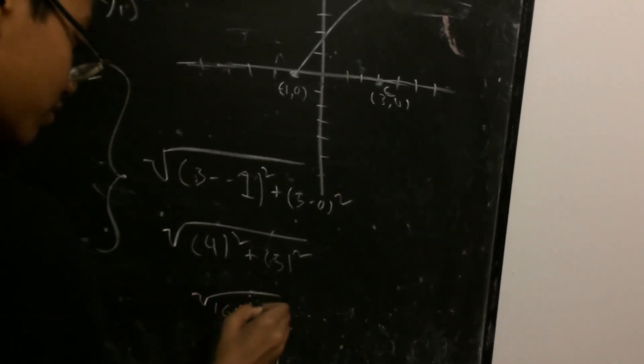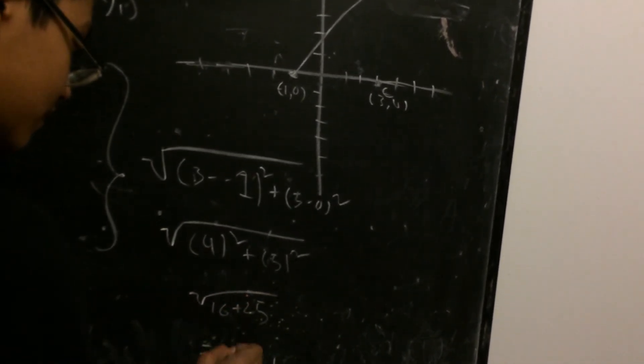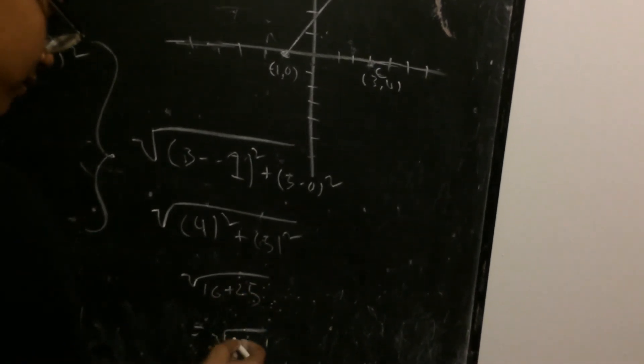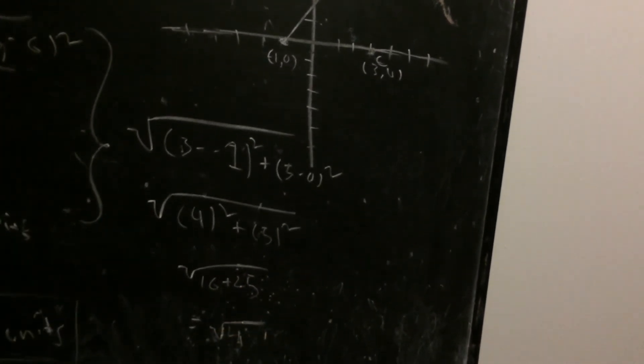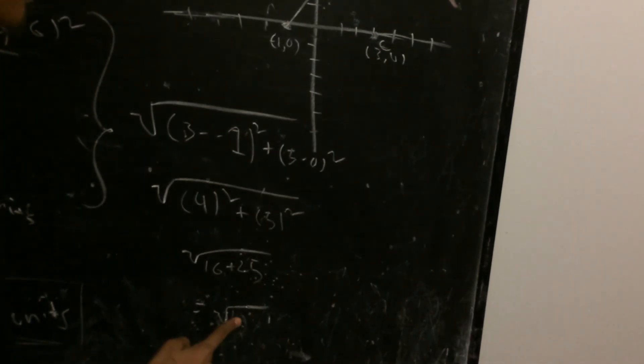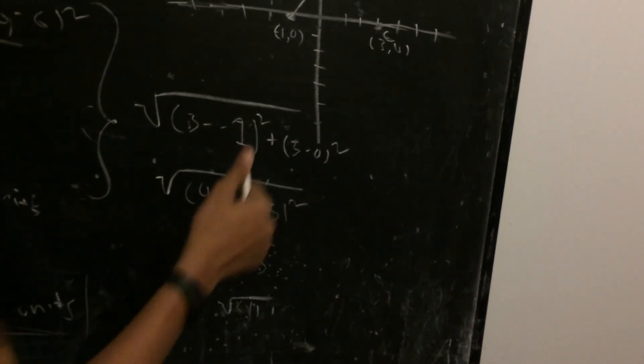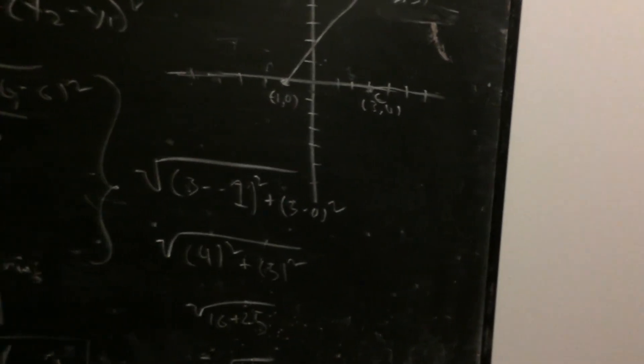So this is 16 plus 25 which is... carry... square root of 41. Oh, this has to be a perfect square root. I don't know if we change...